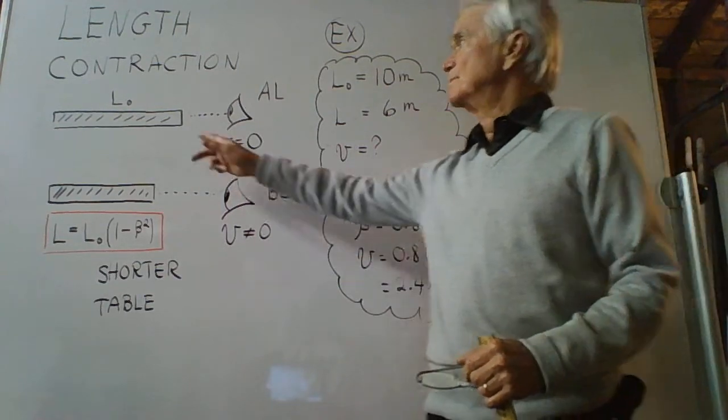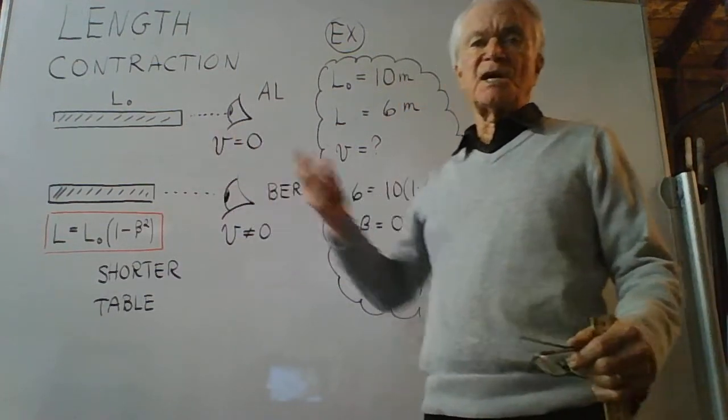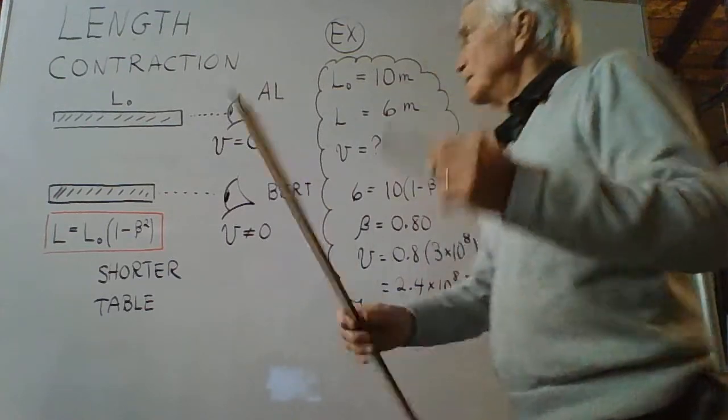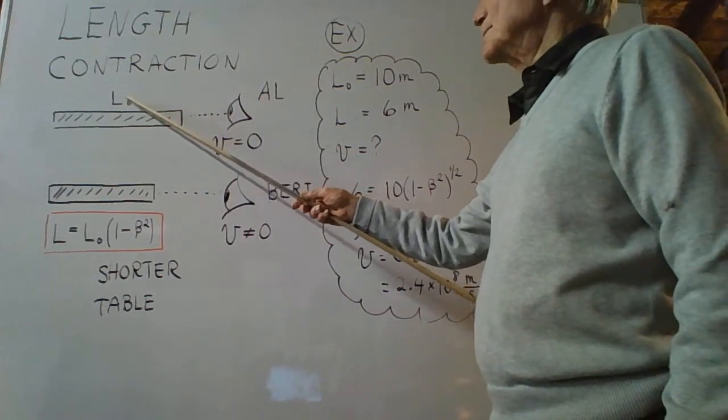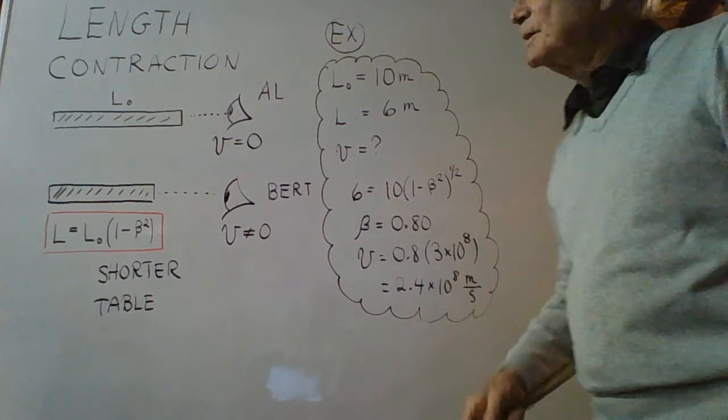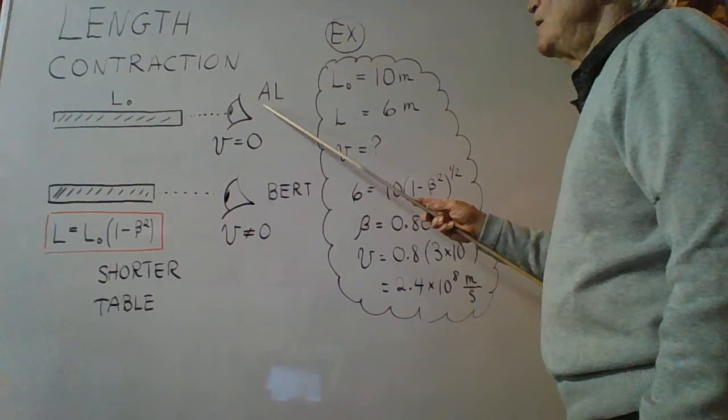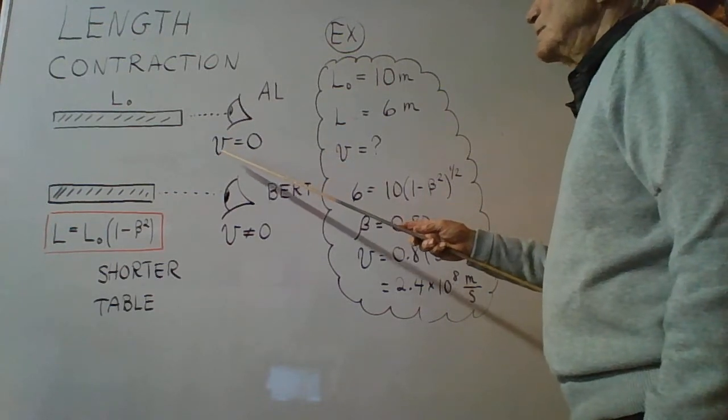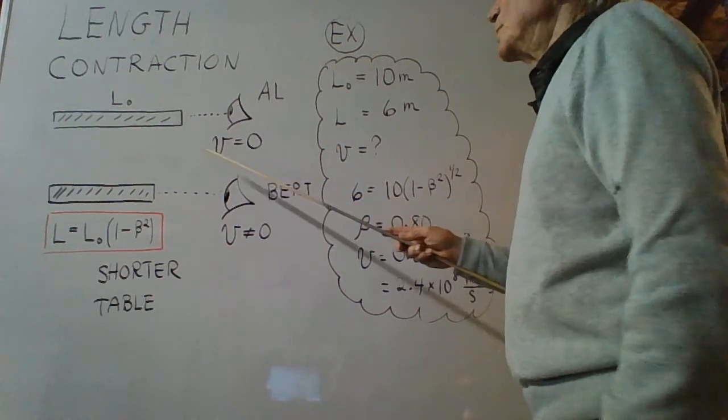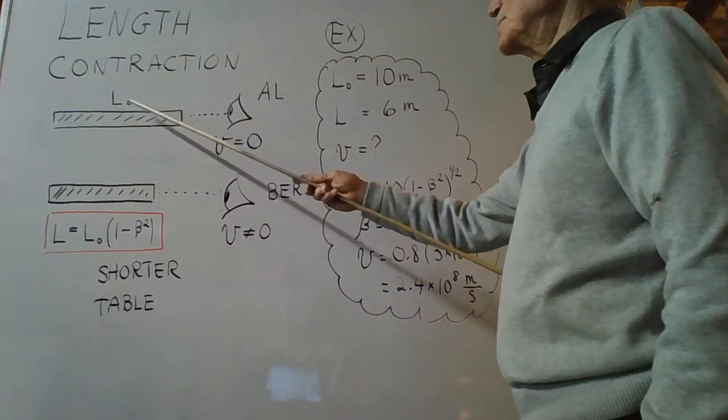Consider this object. Let it be a table. Its length is L0. We can say L0, so-called because this observer, call him Al, has a velocity relative to the table of zero, hence the subscript zero.